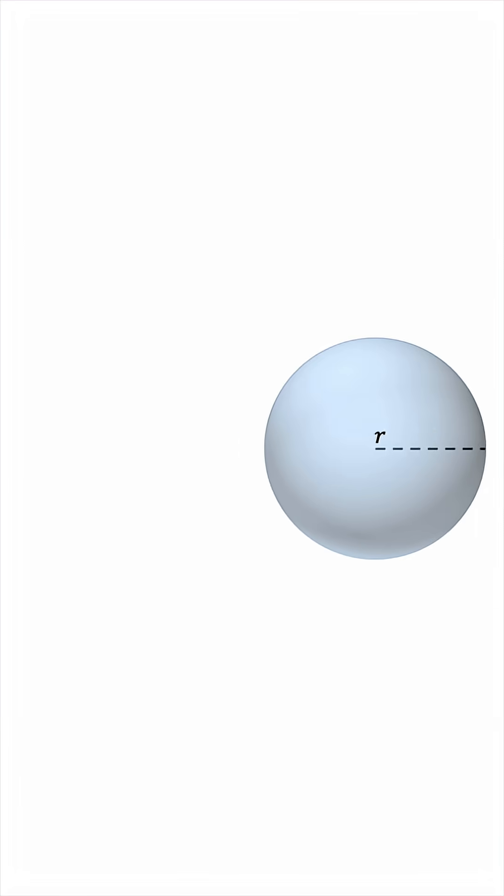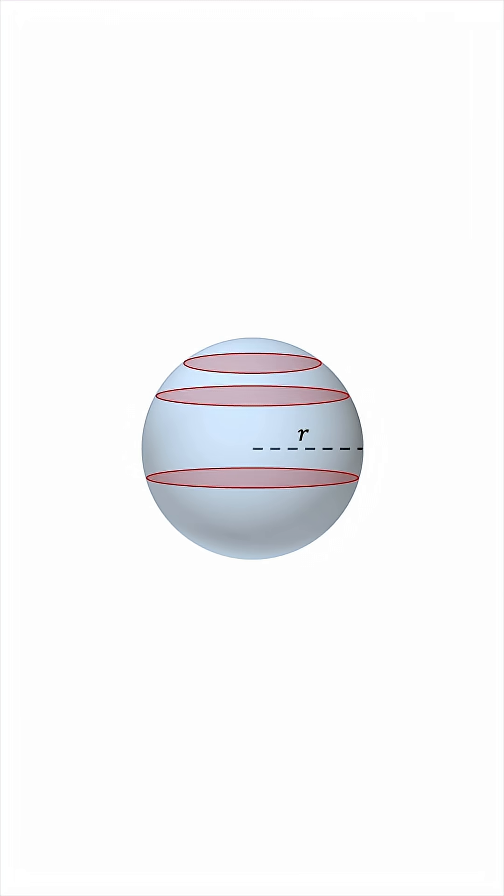But the problem with this sphere is that its cross-section is not uniform. You will always get a circular cross-section, but the size of the circle varies depending on where you slice the sphere. How do we solve this problem?